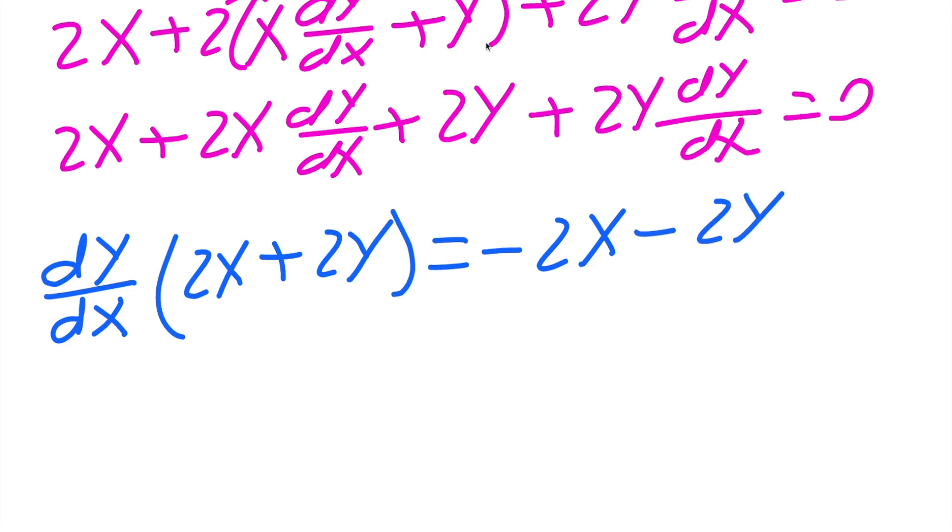At this point, we're very close. We just want to get dy/dx by itself. So we need to divide by 2x + 2y on both sides.